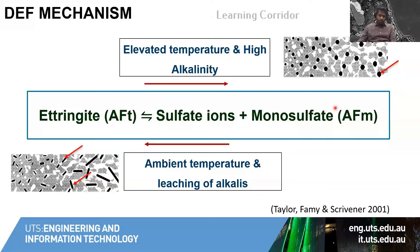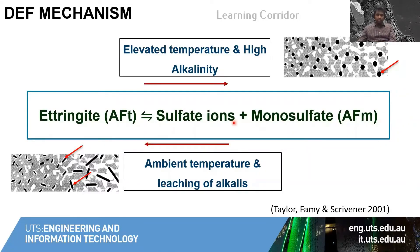Monosulfate is another hydrate which forms in concrete even under normal conditions, but in the case of high heat temperature curing it forms more readily than ettringite. This leaves a lot of sulfate ions in the cementitious system.